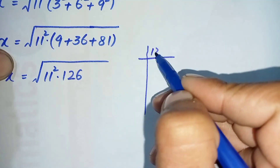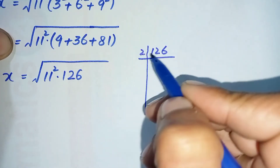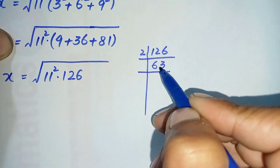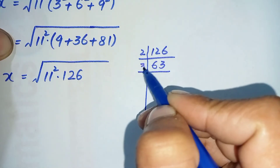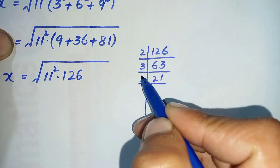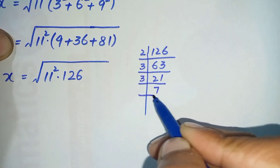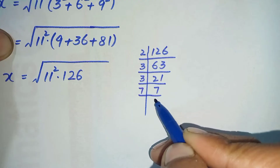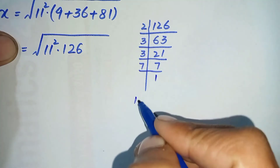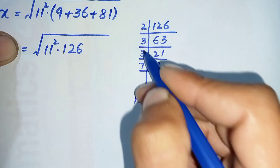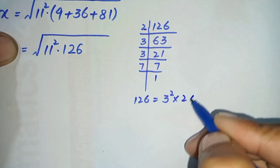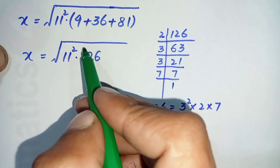Now we will factorize 126 into its exponential or index form. 126 is even so divide by 2, giving 63. 63 is divisible by 3, giving 21. 21 is divisible by 3, giving 7. Since 7 is prime, the factorization of 126 is 2 times 3 squared times 7.